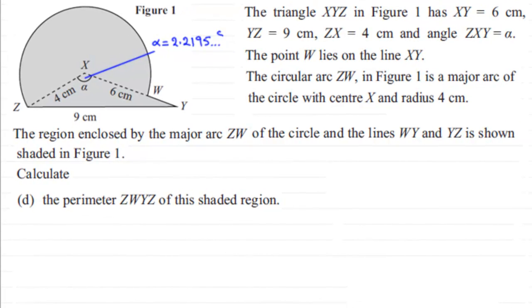Hi, now in this last part we're asked to find the perimeter ZWYZ of this shaded region. So we're trying to find the distance all the way around the shape.